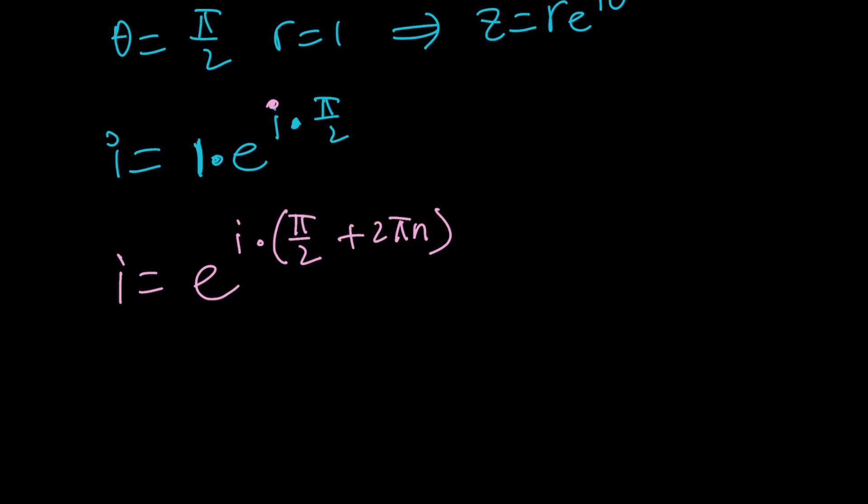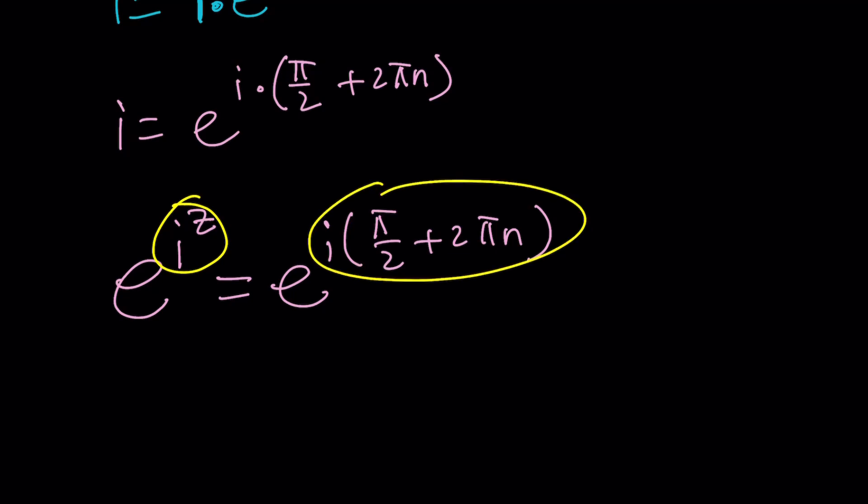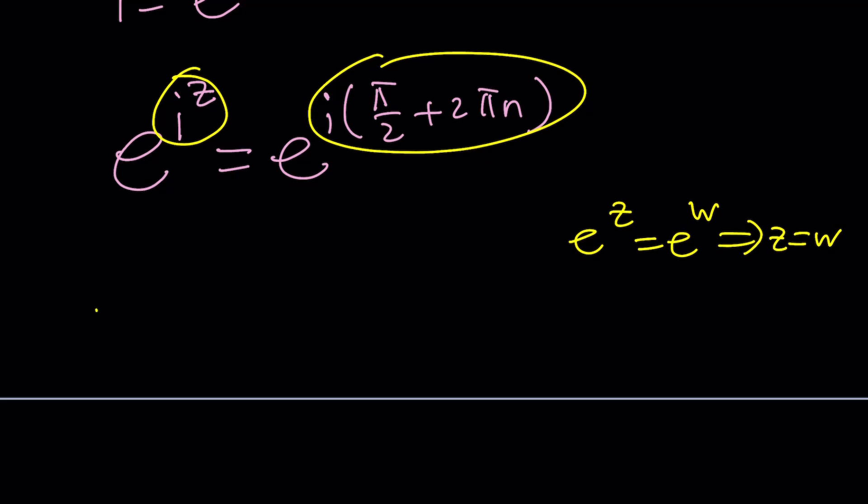Now we're going to set this equal to the left-hand side, which is E to the I to the Z equals this. Now we have the E's on both sides, so we can take natural log. That gives us this equals this. Is it always true that E to the Z equals E to the W implies Z equals W? Obviously we included the 2 pi n I which represents 1 in the complex world, so we should be good to go.